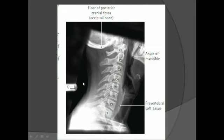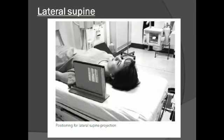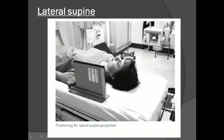The lateral supine position is an improvised position for trauma patients. We cannot move trauma patients freely, so we have to adapt our technique. The patient remains on the stretcher or X-ray table and is kept still. We use a horizontal X-ray beam with a vertical cassette. The centering remains the same but the positioning is slightly different.